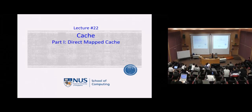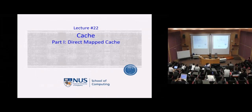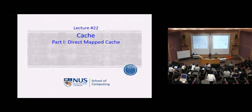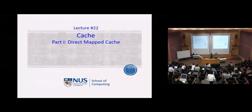Cache is important because if you look at any processor, memory access is always the bottleneck. Even in a pipeline processor, that stage will always take the longest to execute. Memory is inevitable — you need a lot of memory for your program, your code, your data, and you need to access it frequently. So improving your access to memory is critical. No matter how fast you clock your processor, if your memory is slow your whole system slows down.